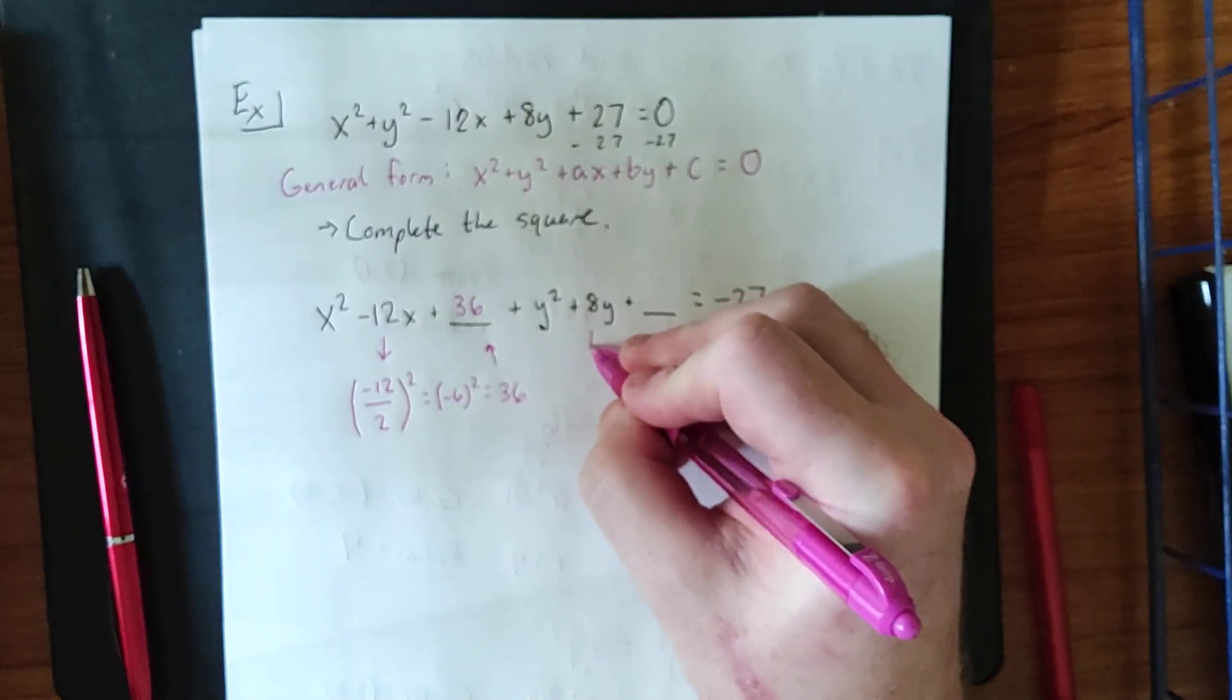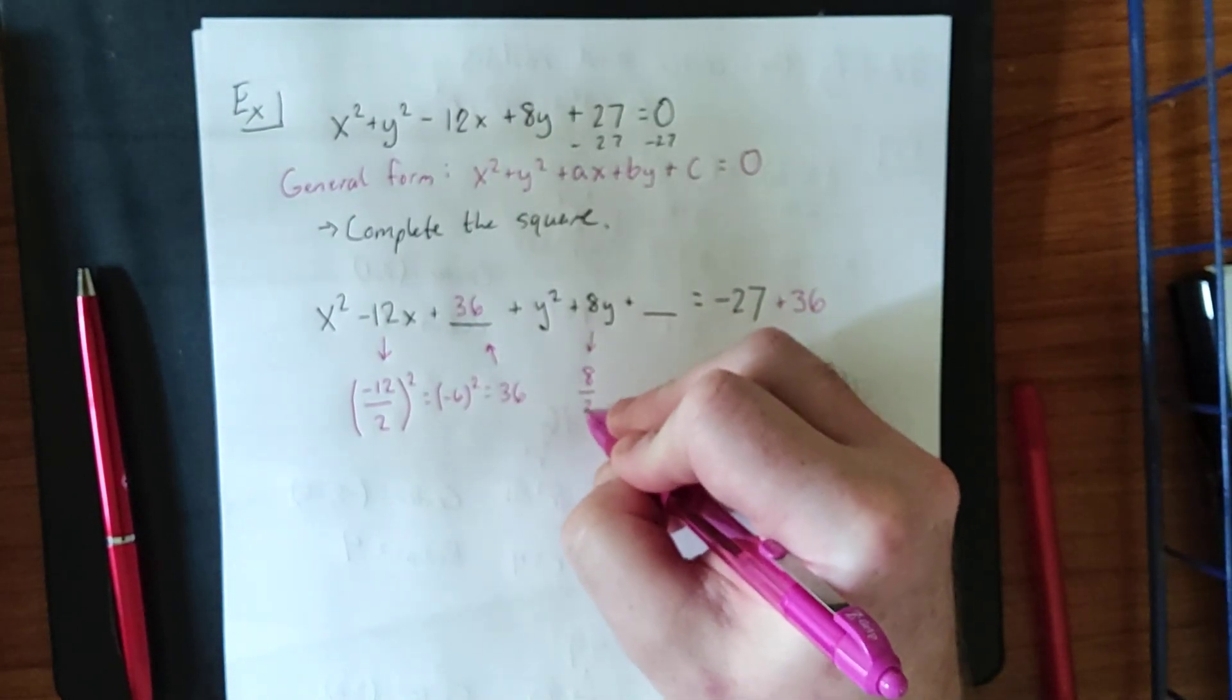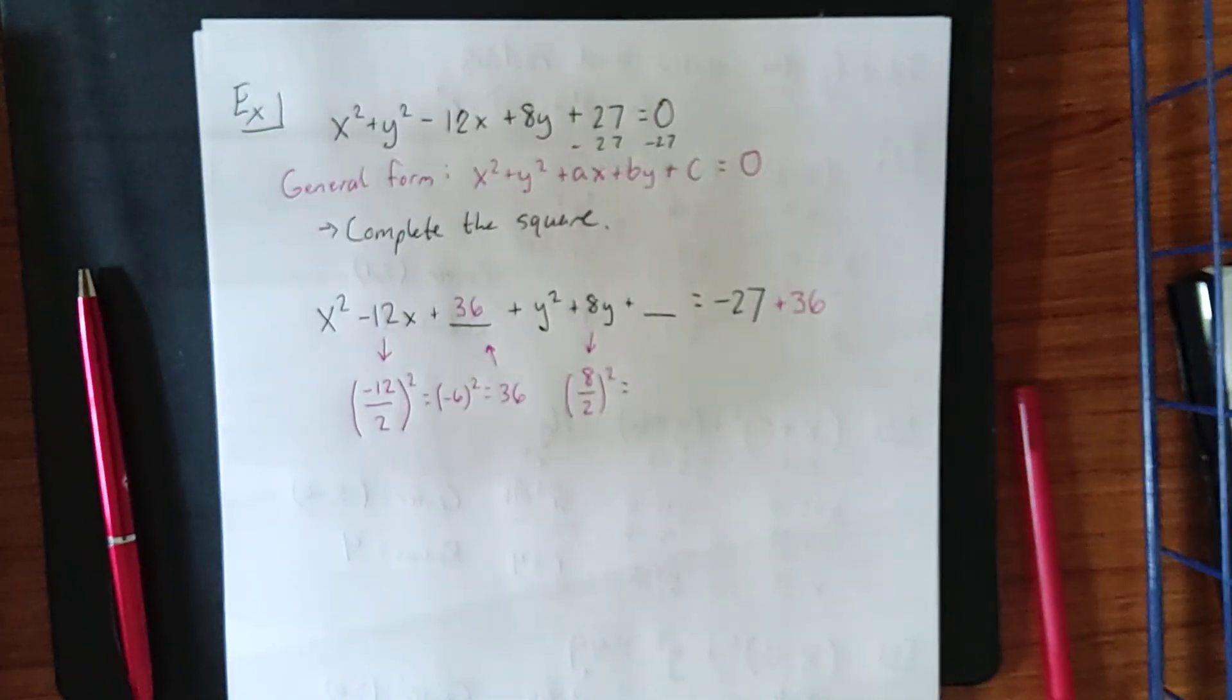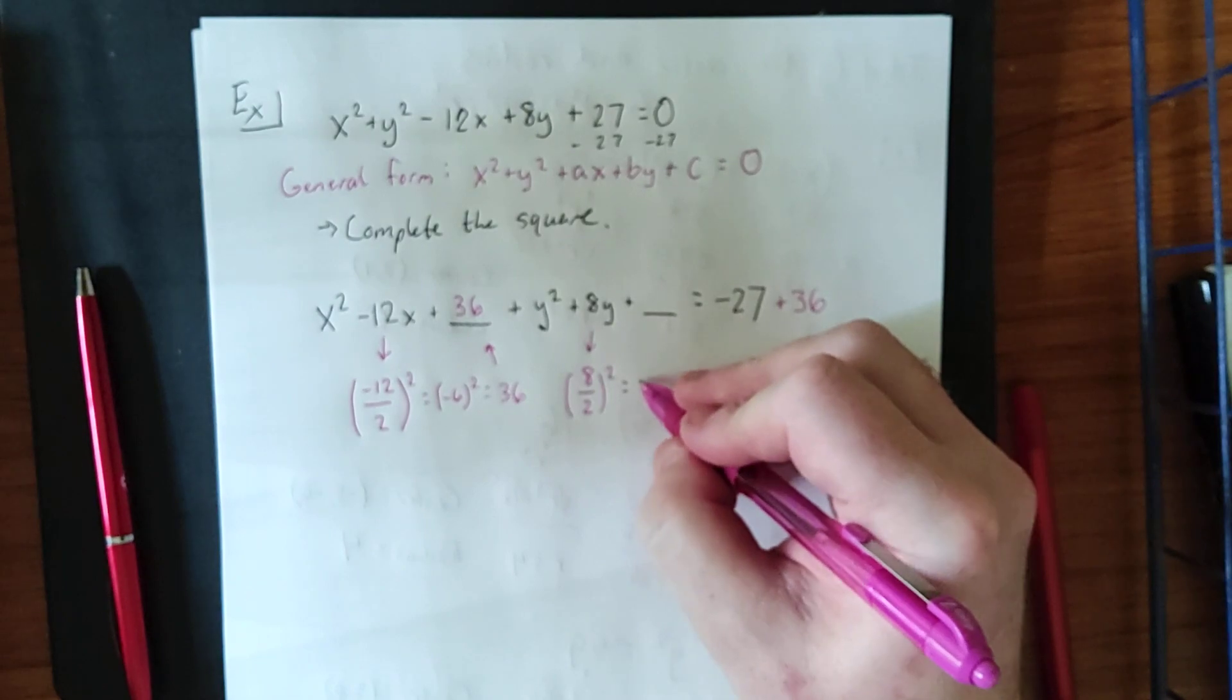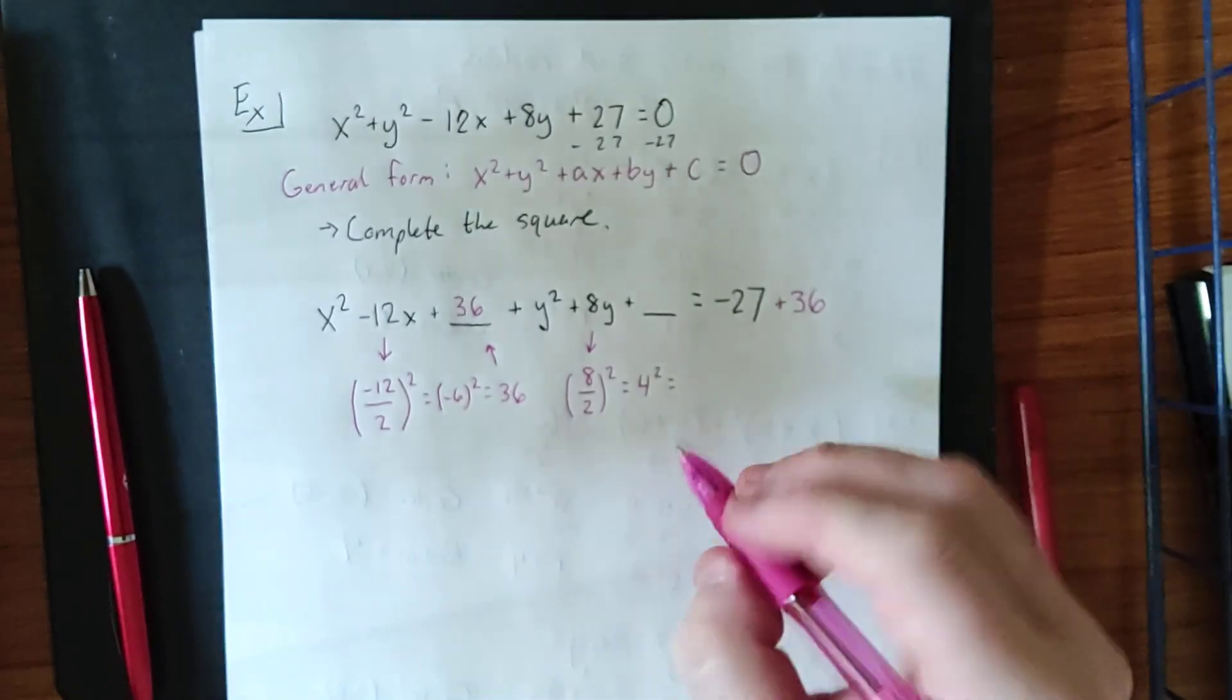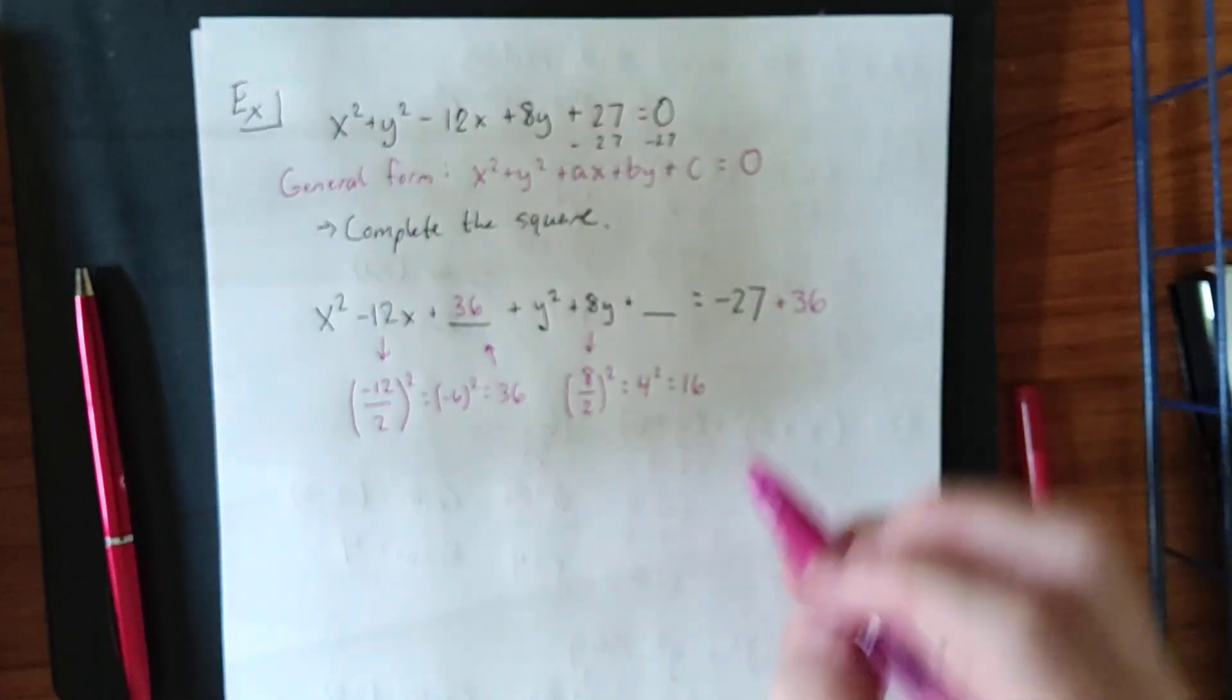We do the same thing for the first power of y. We grab the coefficient. We're going to take half of that, and then we are going to square the result. Once again, simplifying according to the order of operations. This will be 4 squared. No parentheses needed this time, because we're squaring a positive number. We wind up with a 16.